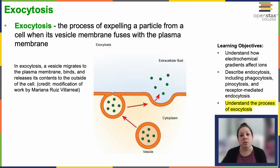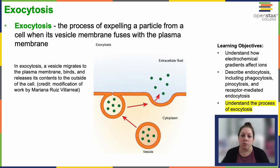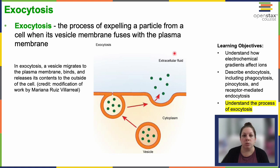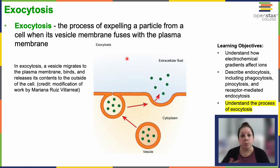So that was bringing things in. We can also put things out. Exocytosis is the opposite process — we expel particles from the cell. It's usually vesicles created by the endomembrane system: from the ER to the Golgi, and the Golgi sends these little vesicles off toward the plasma membrane. They fuse with the plasma membrane and release whatever molecules they carry out into the extracellular fluid. That can be signaling molecules or any number of things, depending on what the cell is producing.